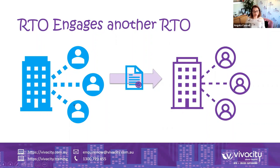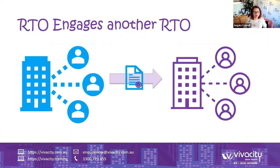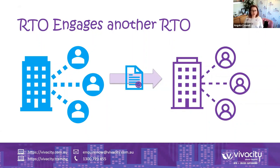For anybody who's an RTO superhero, you can access the mastermind and should have received an update about that. We also have a new members calendar — you should have received access, and you can add all of the Vivacity events to your calendar, including zoom links. I'm going to pop the link to register for our calendar in the chat, which has all of our events.